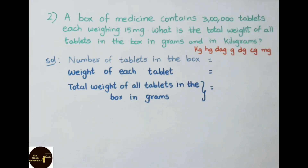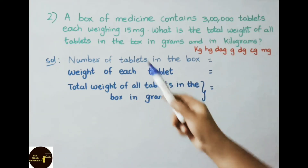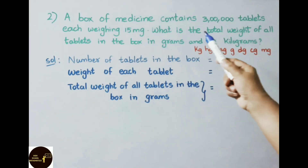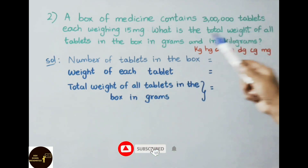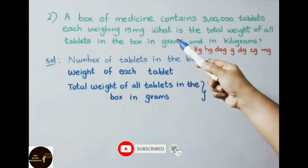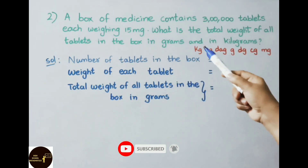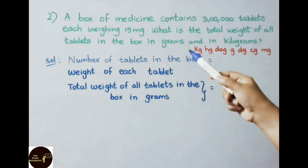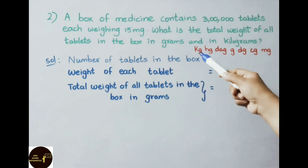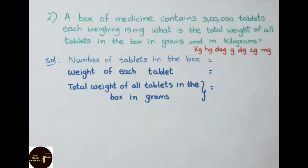Let us see the second sum. A box of medicine contains 3 lakh tablets, each weighing 15 mg. What is the total weight of all tablets in the box, in grams and in kilograms?